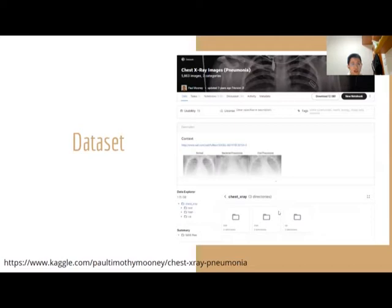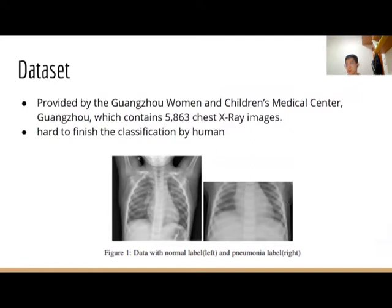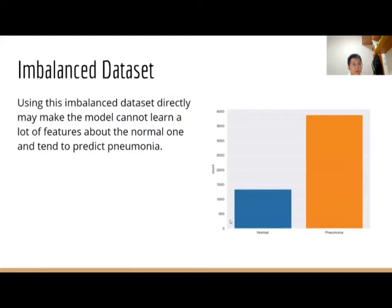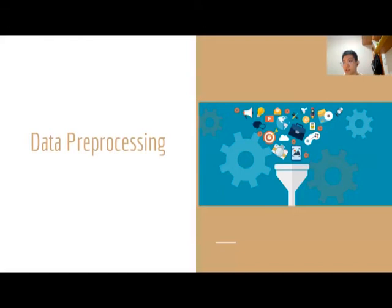Here is our dataset and the URL is shown here. We find out that it is very hard for people without any medical knowledge to finish the classifications. We think it also needs a doctor to look at it carefully to give the correct results. There are two examples of different label data shown here. After doing visualizations of the dataset, we can find out the dataset is imbalanced. Using these imbalanced datasets directly may cause the model to not learn enough features about the normal cases and tend to predict pneumonia. So we need to do some data processing.